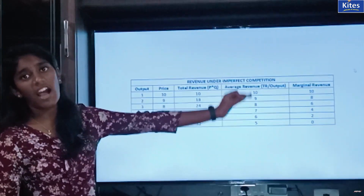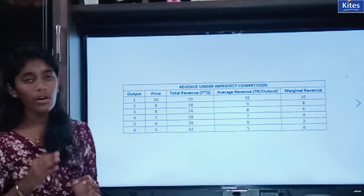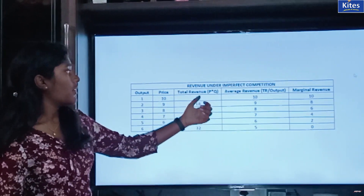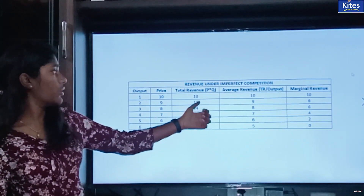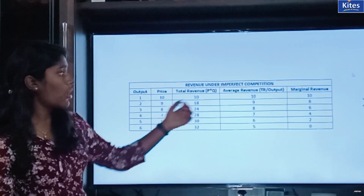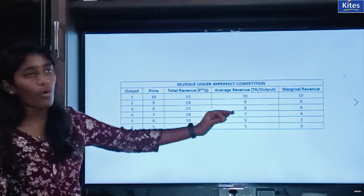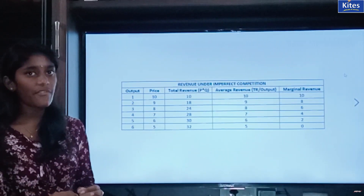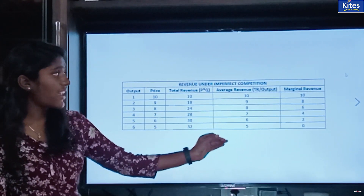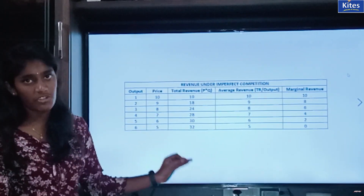The next is marginal revenue. Marginal revenue is the addition made to the total revenue with the addition of one more unit of output. The marginal revenue would be 10, 8, 6, 4, 2, and 0. You can see in this table that the marginal revenue is decreasing at a faster rate than the average revenue.